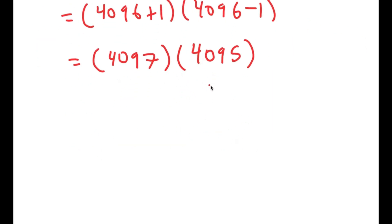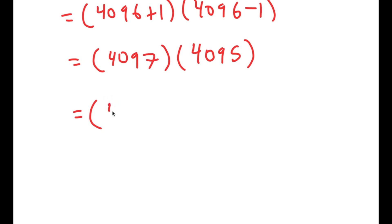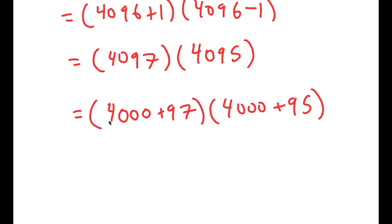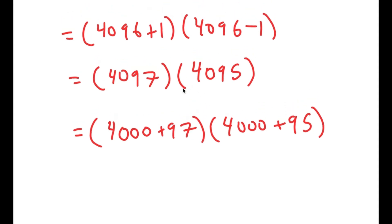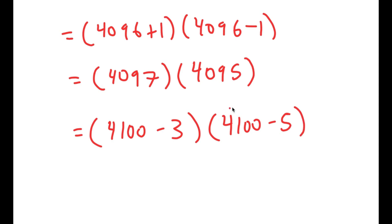Now, how would I solve this? What most people would do is try to solve this using the basic multiplication method, but this takes way too long. So a better way is to rewrite this as 4,000 plus 97 times 4,000 plus 95. Because 4,000 has so many zeros in it, it's much easier to solve. Alternatively, an even easier method is to rewrite 4,097 as 4,100 minus 3, times 4,100 minus 5. Notice how we have 3 times 5, which is much easier to solve than 97 times 95.